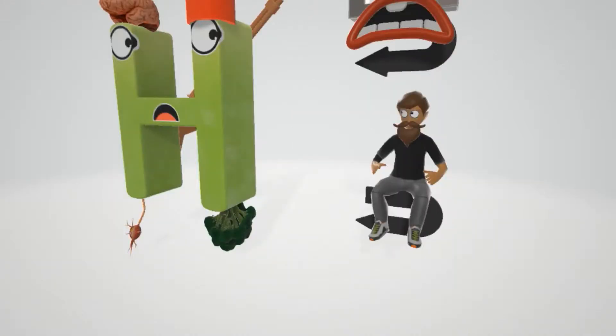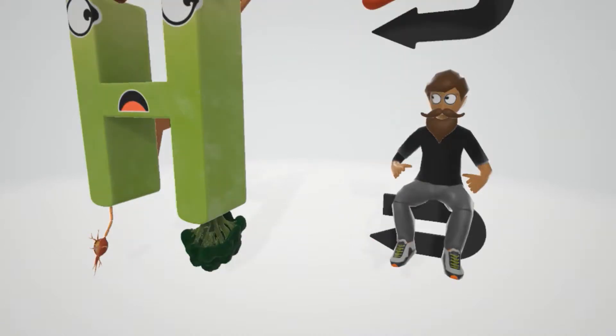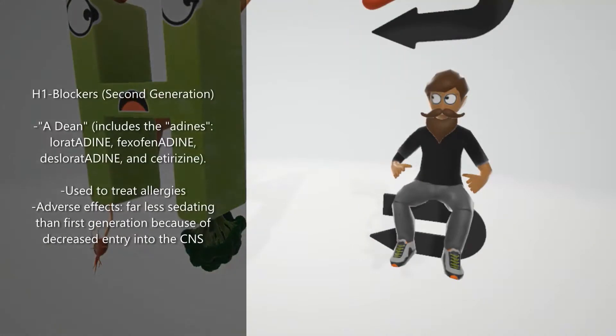Now let's talk about the H1 blockers second generation. Here we have Adene. He's the dean of the school. So he's Adene. This helps us remember that the second generation H1 blockers all have adine in their name: loratadine, fexofenadine, and desloratadine. There's another one I didn't mention, and that's cetirizine. Loratadine is more known as Claritin, and cetirizine is known as Zyrtec. These are also used to treat allergies.